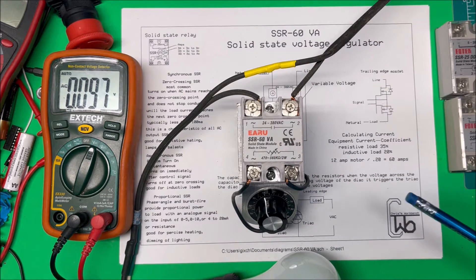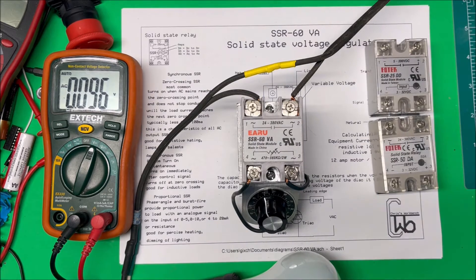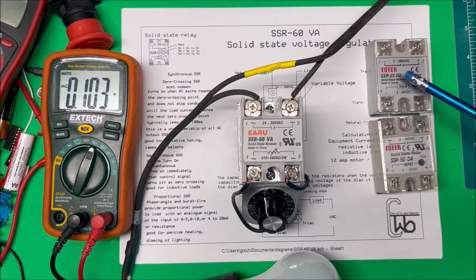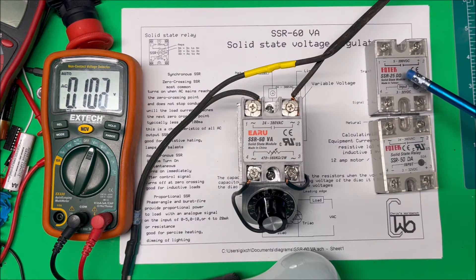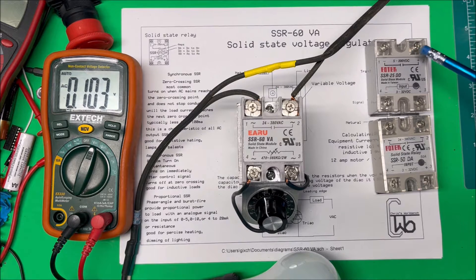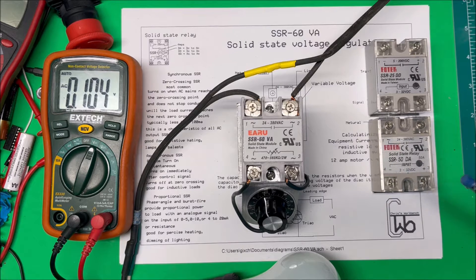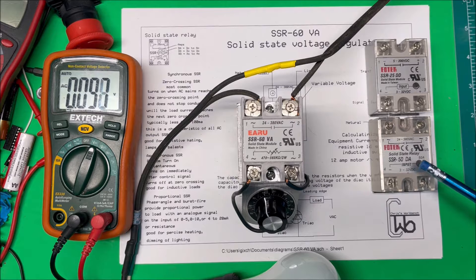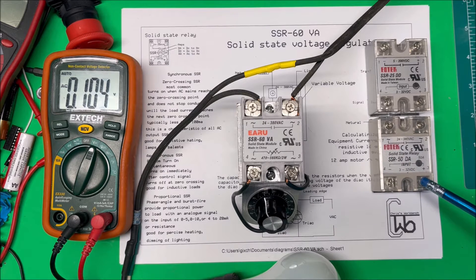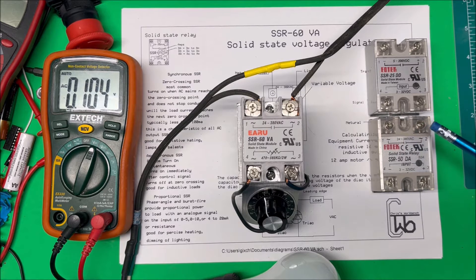These are the same form factor as solid-state relays. I've got a couple here. This one is an SSR-25DD, so 25 amps with a DC input and it switches a DC load. This one switches from 5 to 200 volts DC. And this one here is an SSR-50, 50 amps DA, so we turn it on with a DC input and it switches an AC load from 24 to 380 volts AC.